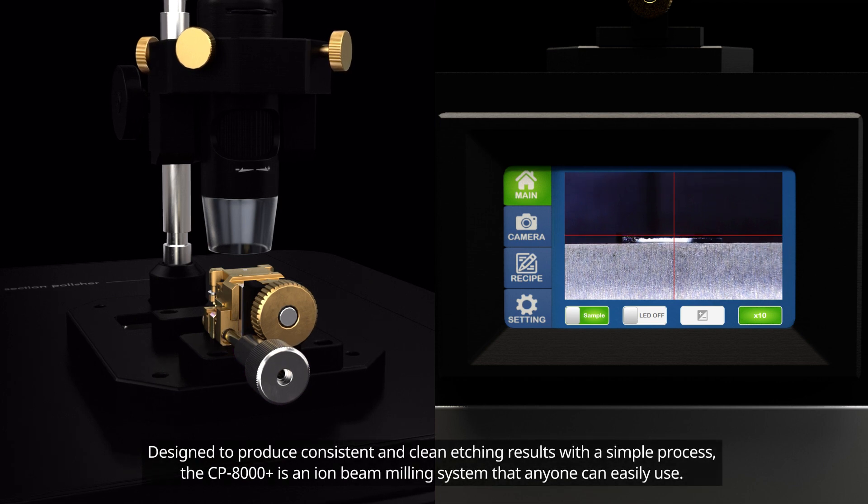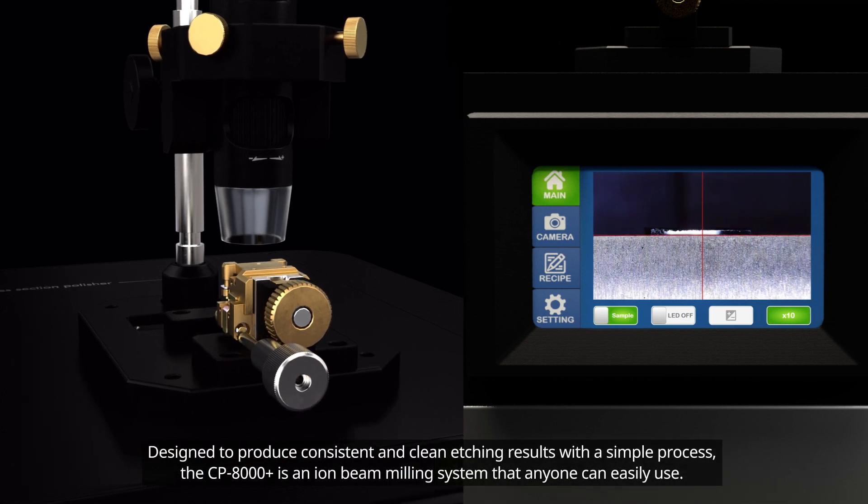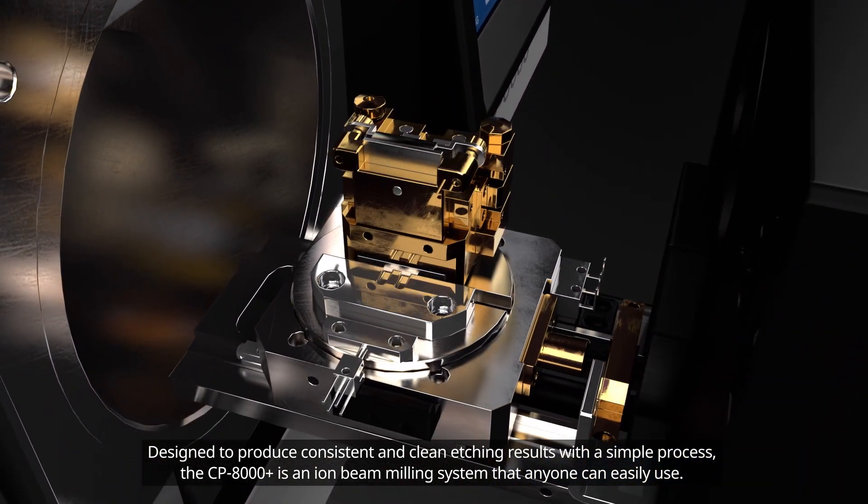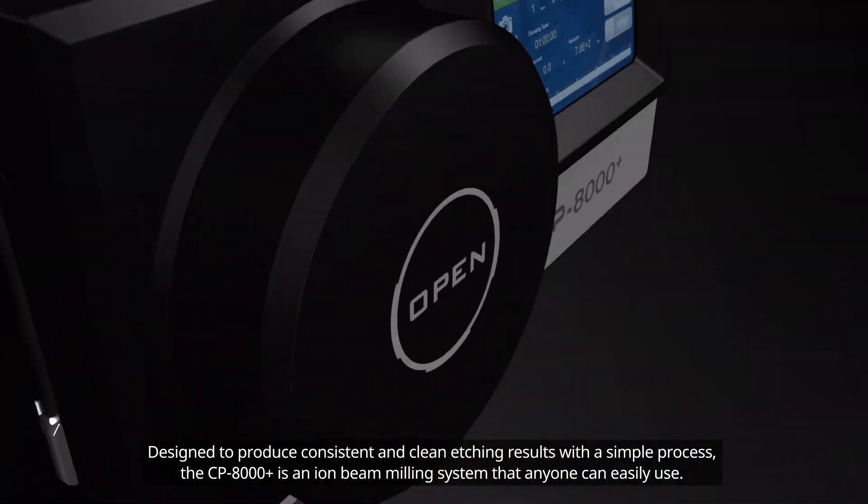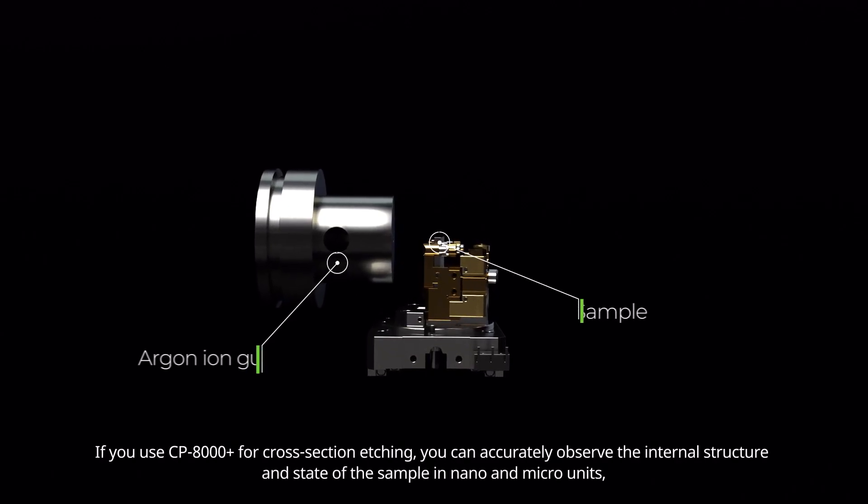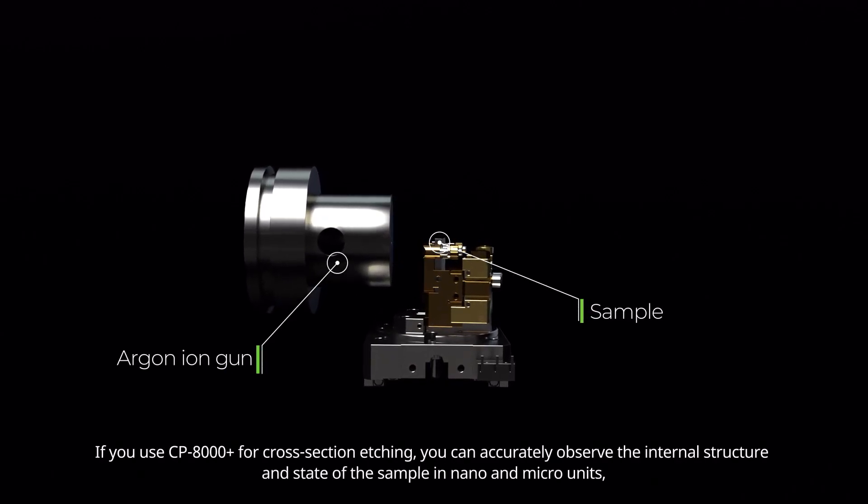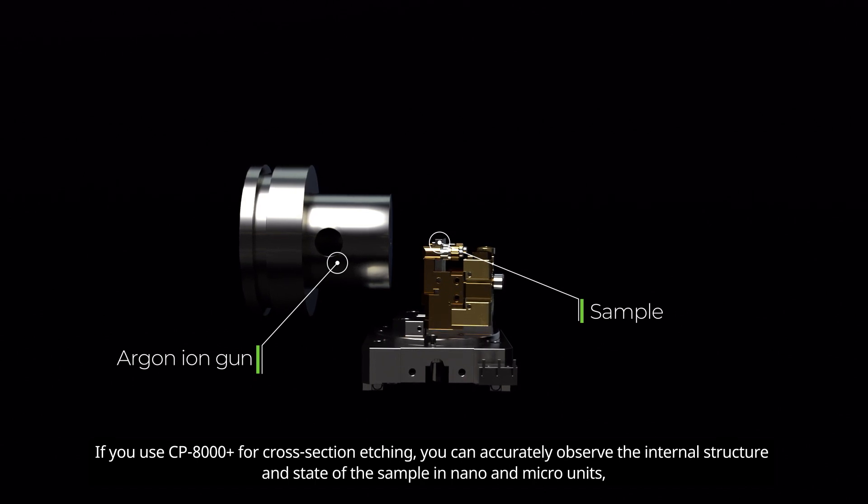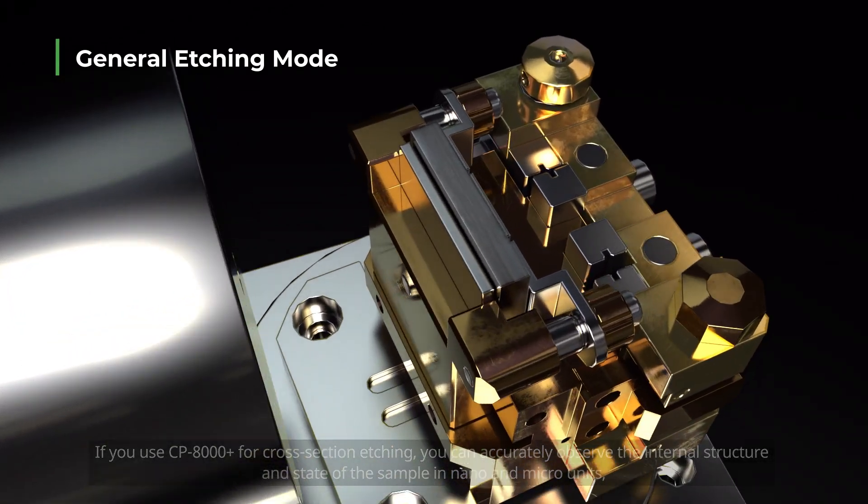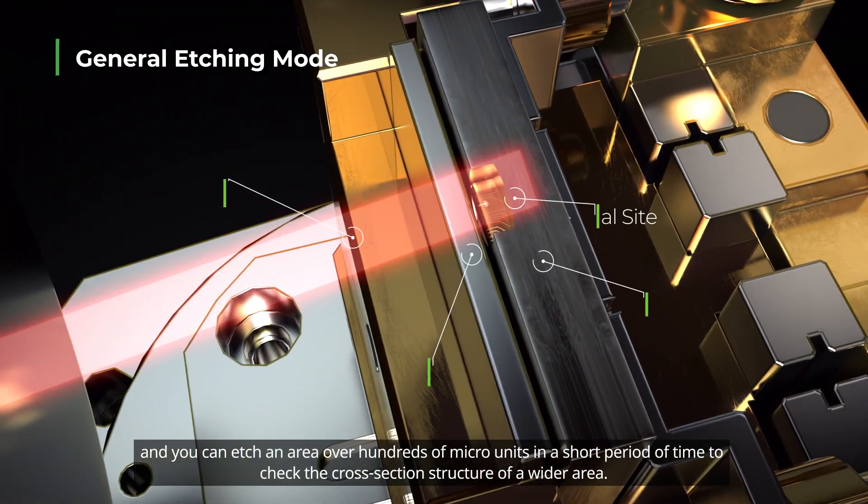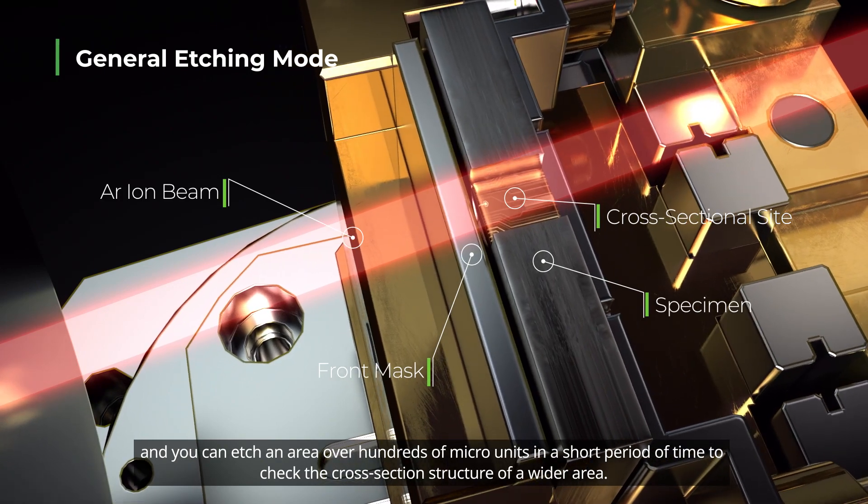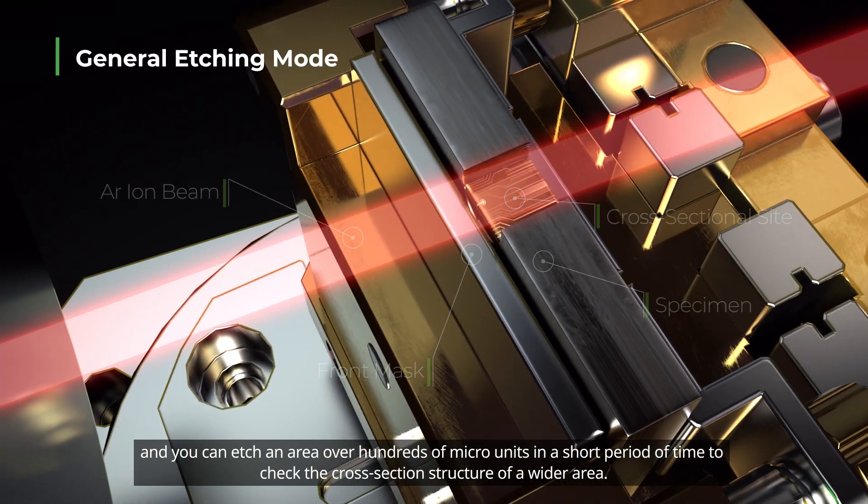Designed to produce consistent and clean etching results with a simple process, the CP8000PLUS is an ion beam milling system that anyone can easily use. If you use CP8000PLUS for cross-section etching, you can accurately observe the internal structure and state of the sample in nano and micro units. And you can etch an area over hundreds of micro units in a short period of time to check the cross-section structure of a wider area.